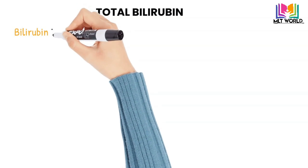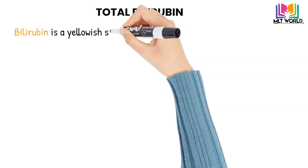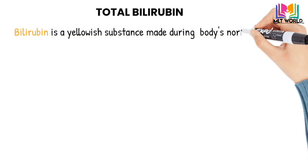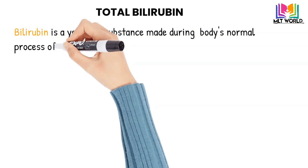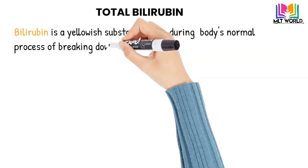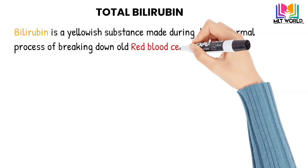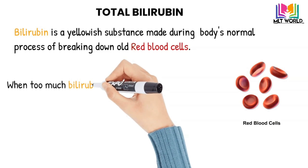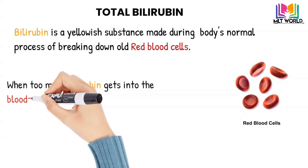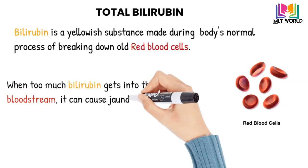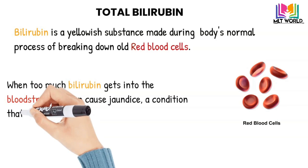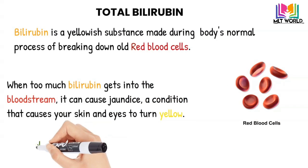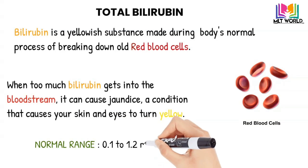Now we will discuss total bilirubin. Bilirubin is a yellow substance produced during the normal breakdown of red blood cells. Red blood cells have a normal lifespan of 120 days, after which they lyse and release bilirubin. Bilirubin passes through the liver and is excreted in the stool. Elevated bilirubin, called jaundice, may indicate liver damage, disease, or certain types of anemia, causing the skin and eyes to turn yellow. Normal bilirubin level is 0.1 to 1.2 mg/dL (1.71 to 20.5 mmol/L).